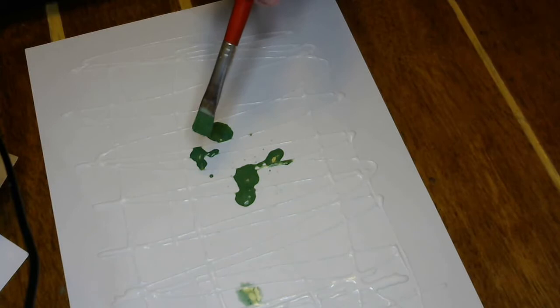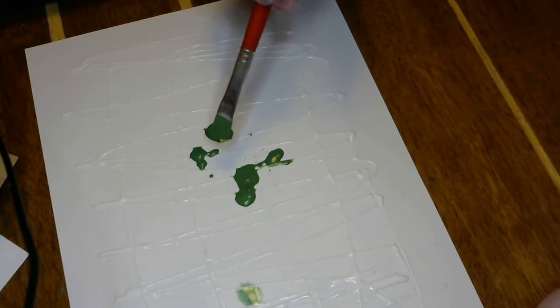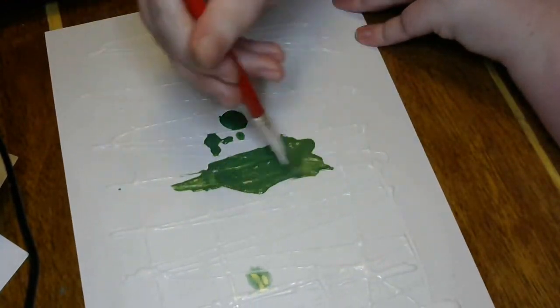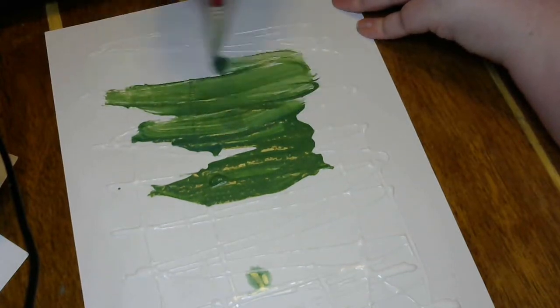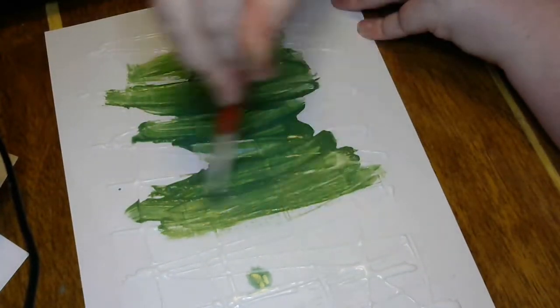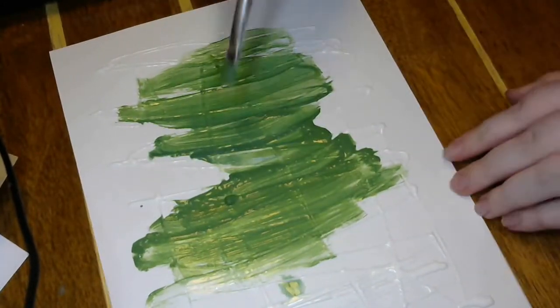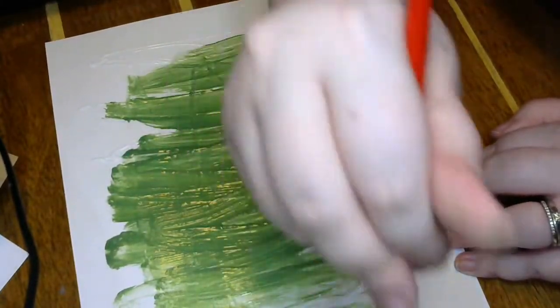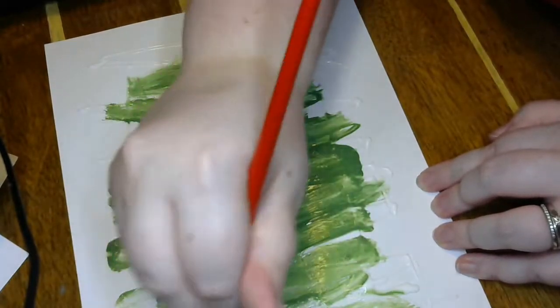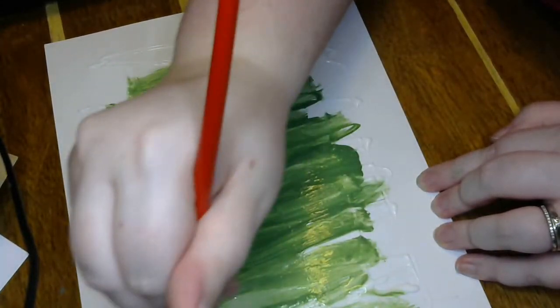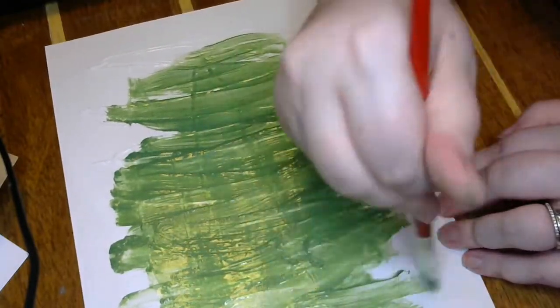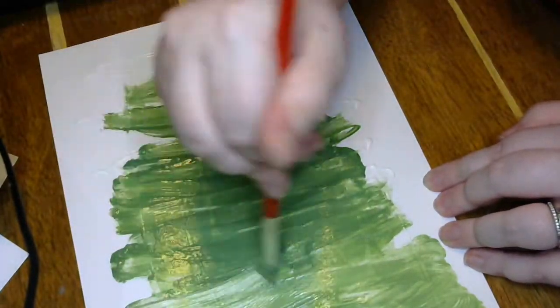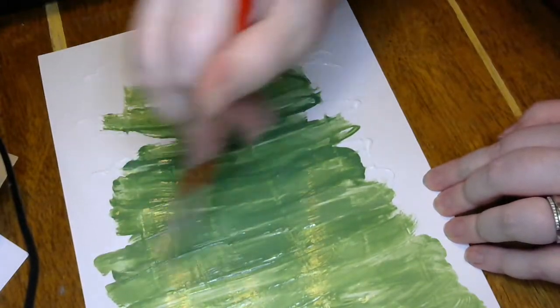All right, so now that we have our colors, whichever you want, I'm going to go ahead and take some more water and just spread this all around on top of that glue. It's okay if it mixes, it's just a part of it. And I'm not going to go straight to the edges because I don't really want that much of a mess.